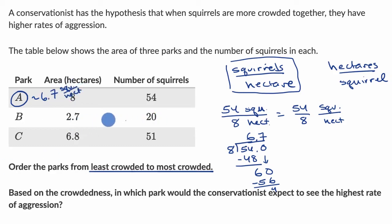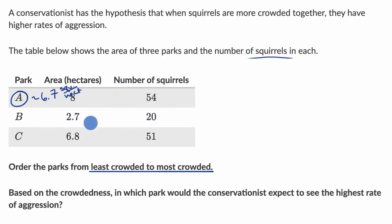Now for park B: we have 20 squirrels for every 2.7 hectares. One thing we can do to help simplify this, so we don't have to deal with decimals, is multiply both the numerator and the denominator by 10. This is equivalent to saying you have 200 squirrels for every 27 hectares.